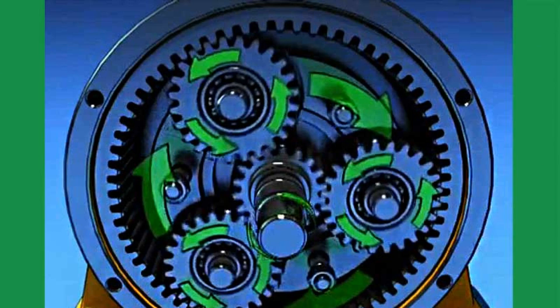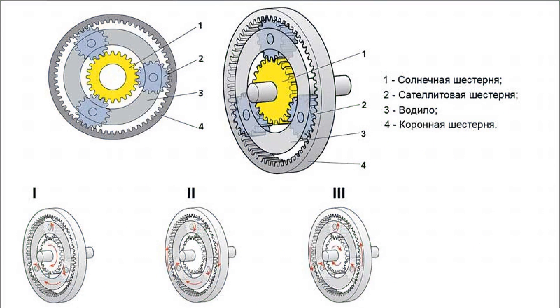Device, principle of operation. The automatic transmission can be schematically represented as a construction consisting of two parts: a planetary mechanism and a torque converter. The torque from the power unit is transmitted to the torque converter, which transforms the torque reacting to changes in the driving mode, or does not transmit rotation at all. There are three shafts in the gearbox — drive, intermediate, driven — and their gears are in constant mesh.